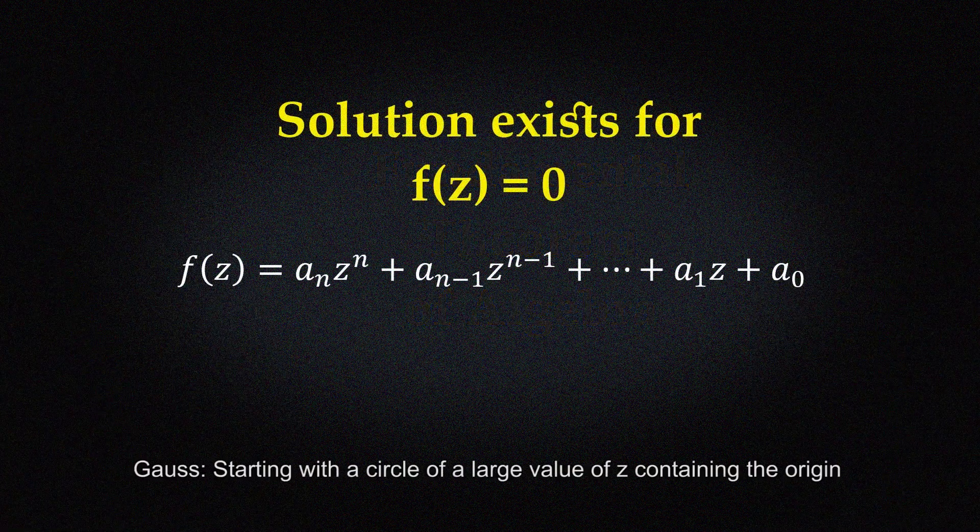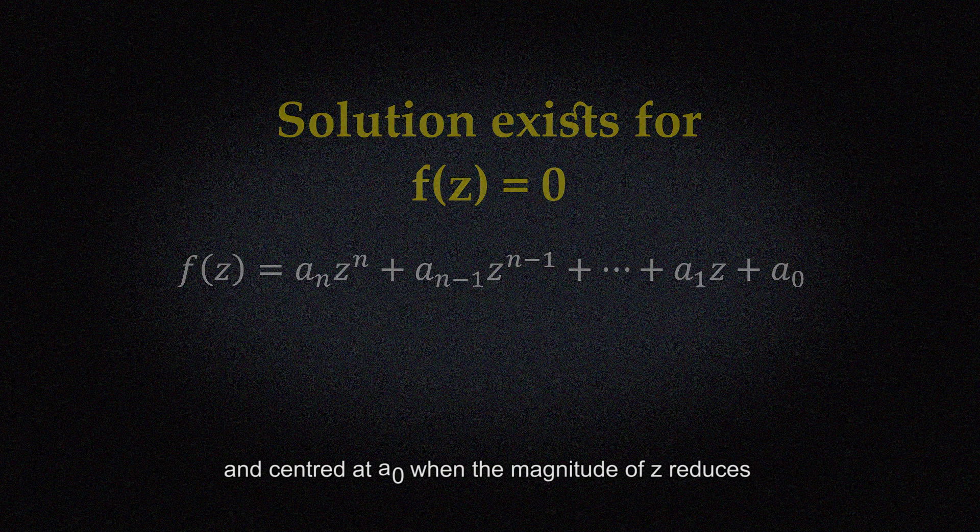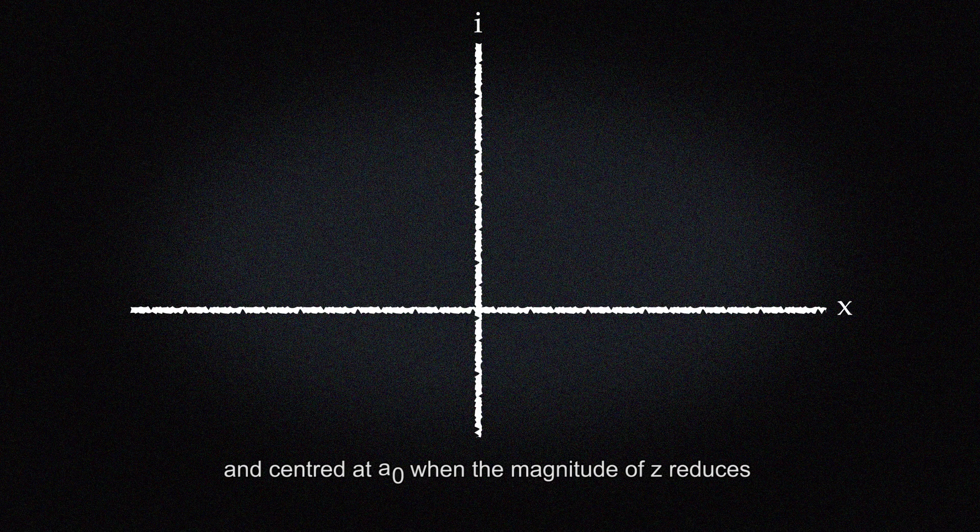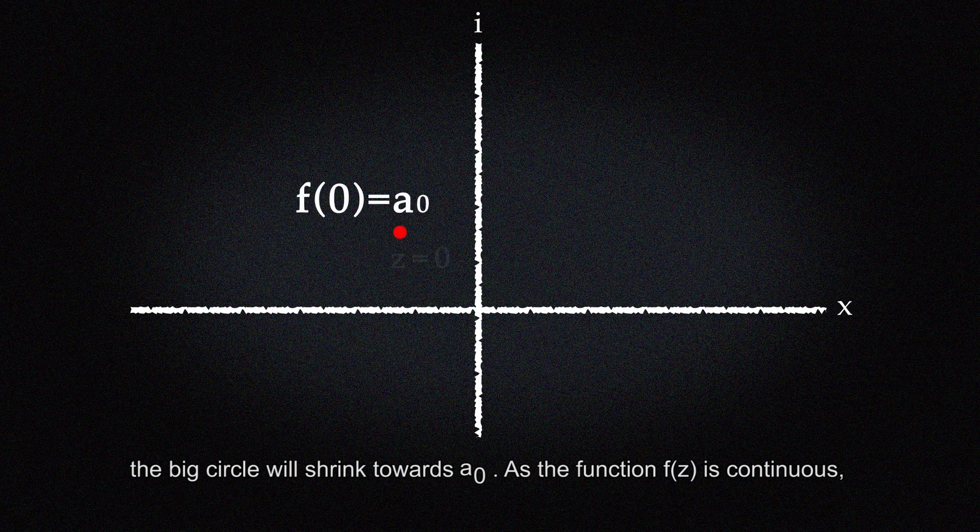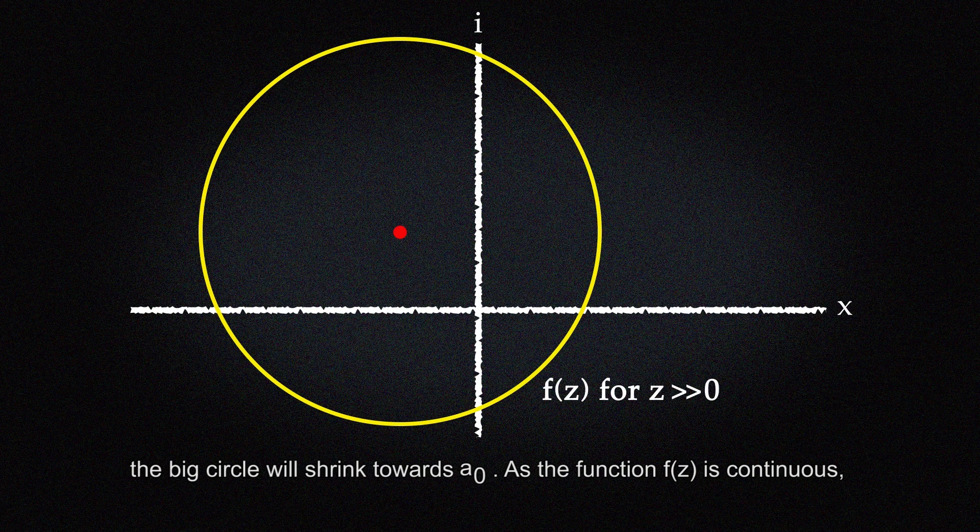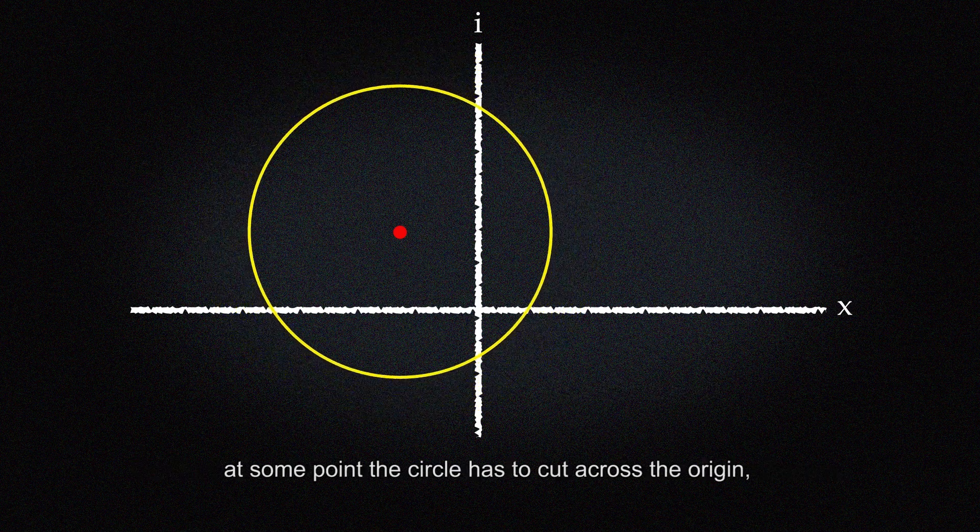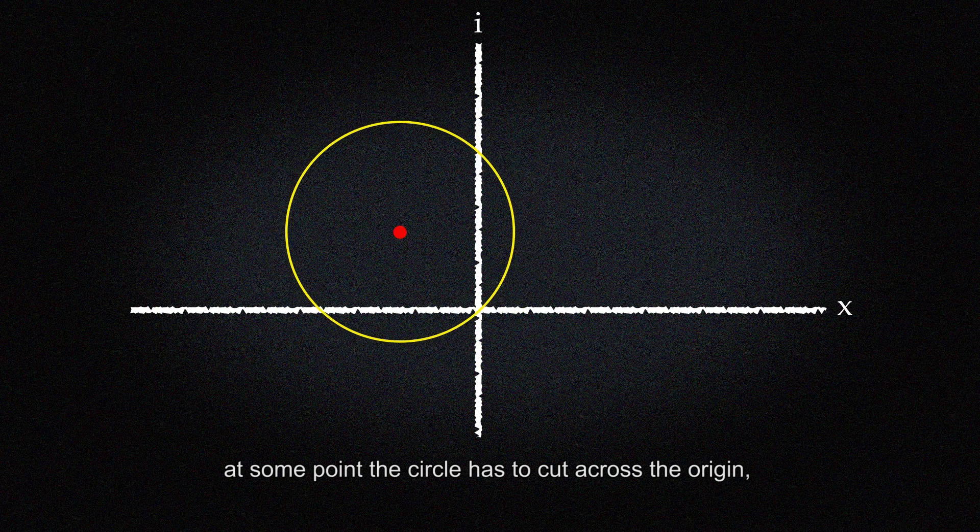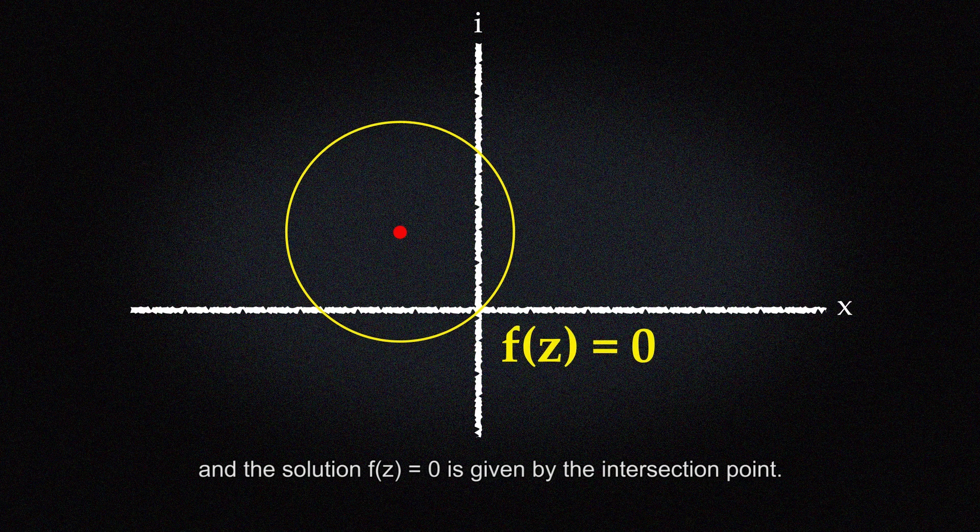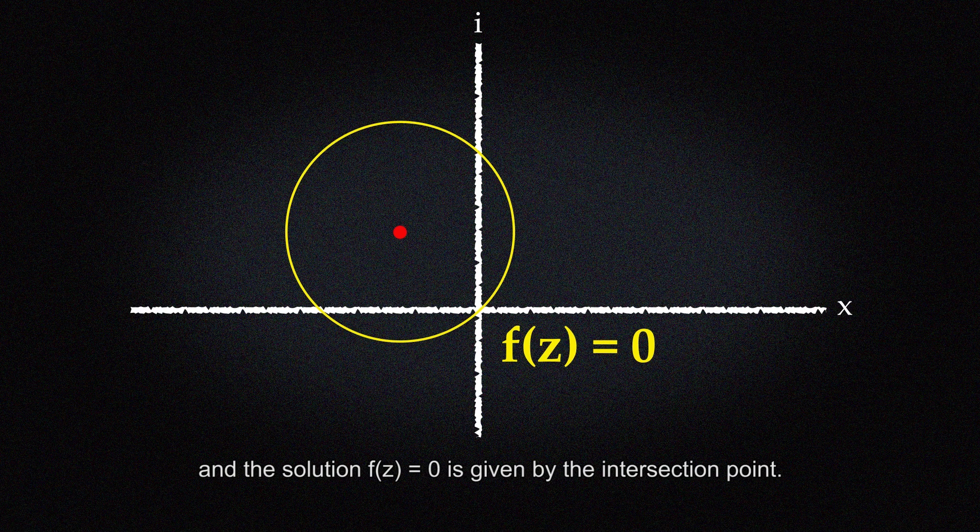Starting with a circle of a large value of z containing the origin and centered at a0, when the magnitude of z reduces the big circle will shrink towards a0. As the function f(z) is continuous, at some point the circle has to cut across the origin, and the solution f(z) equals 0 is given by the intersection point.